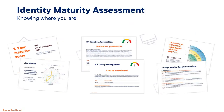Our identity maturity assessment looks at your current identity processes and compares them to best practice in terms of identity principles. We look at uncovering areas of risk and improvement within your organization and your capability for balancing identity security and governance operations. Apart from the categories already mentioned — such as automation and consolidation — we also look at B2B (business to business), attestation (your recertification of access to resources), group management, and user experience, to name just a few.